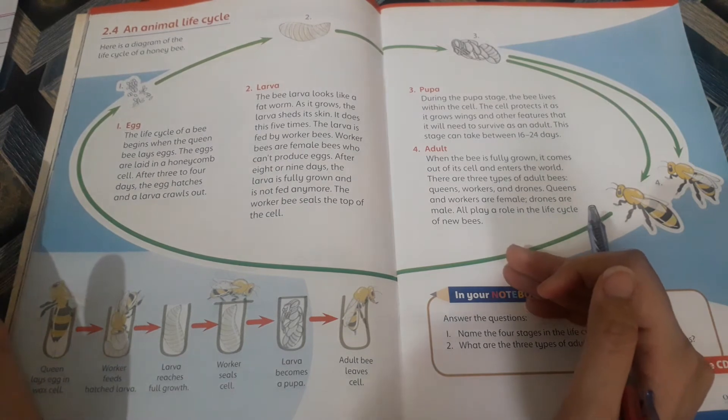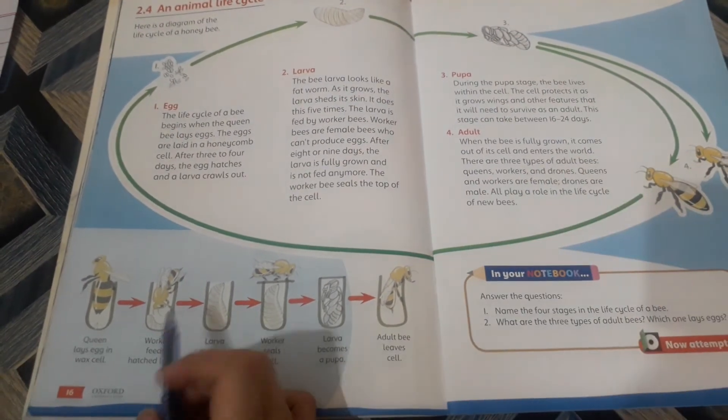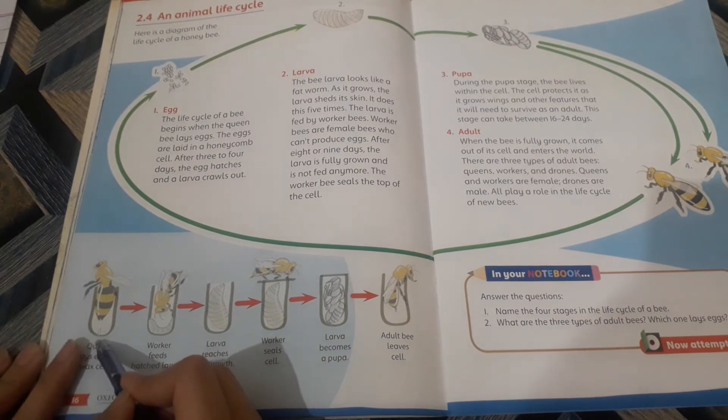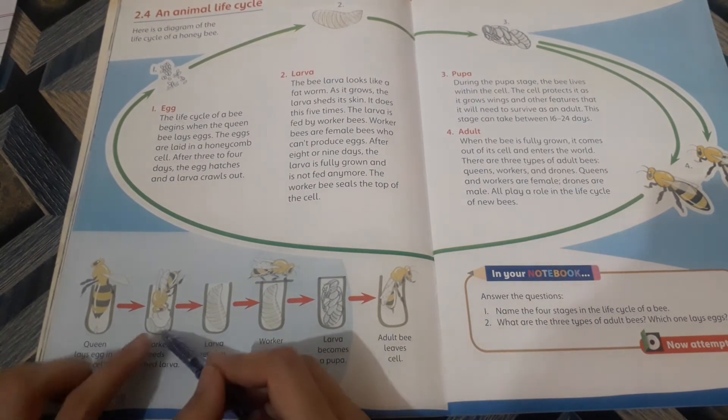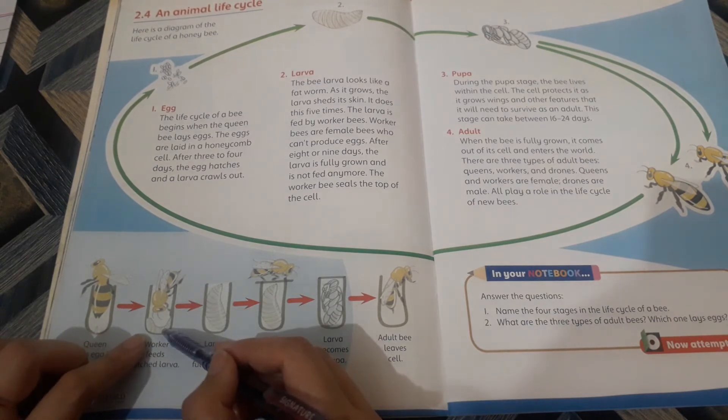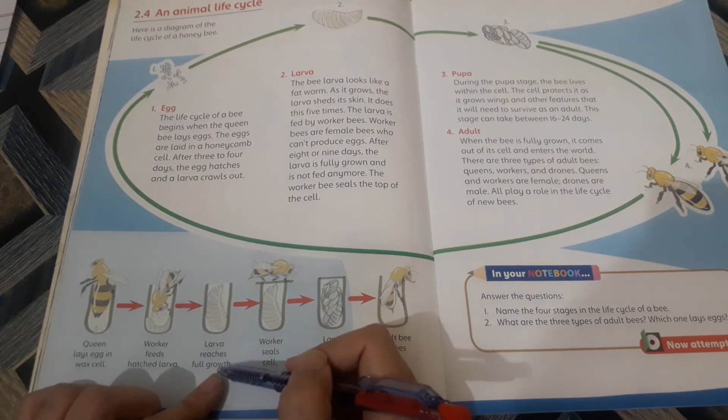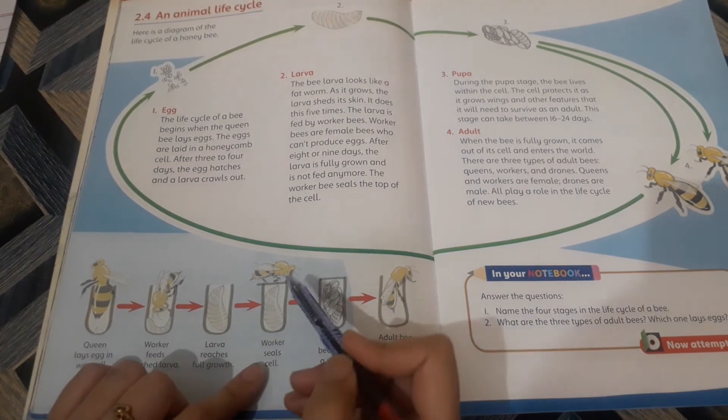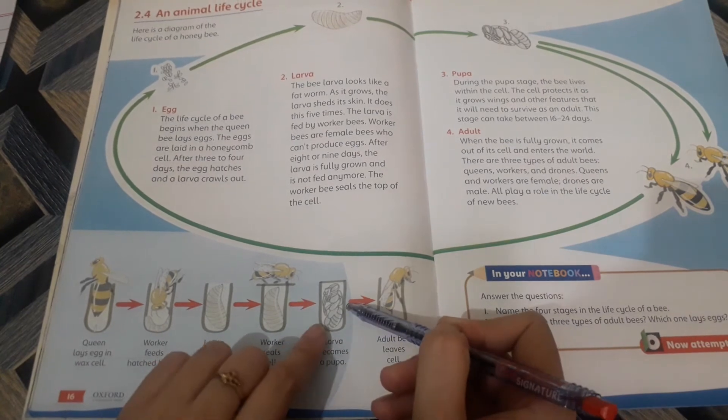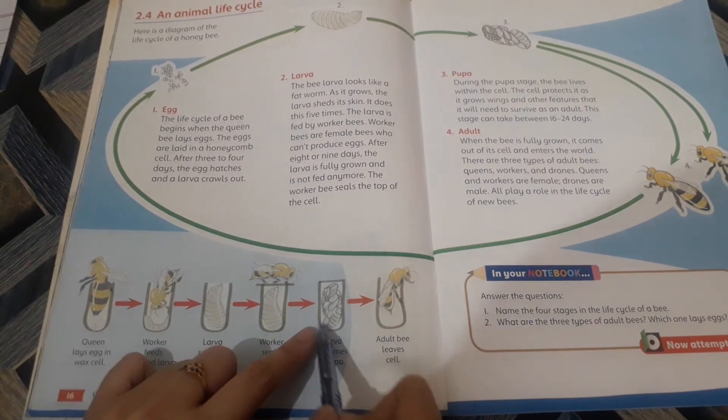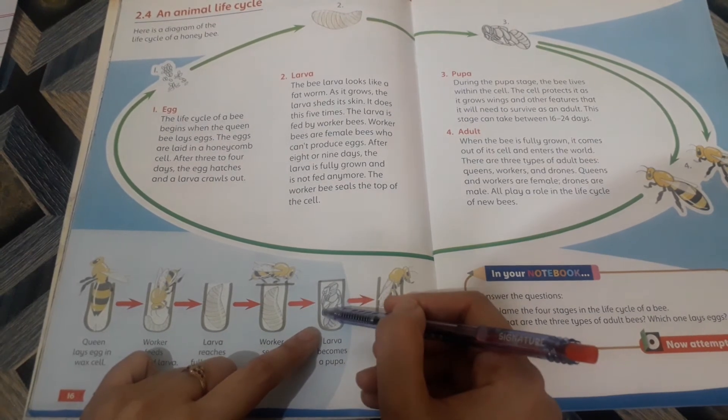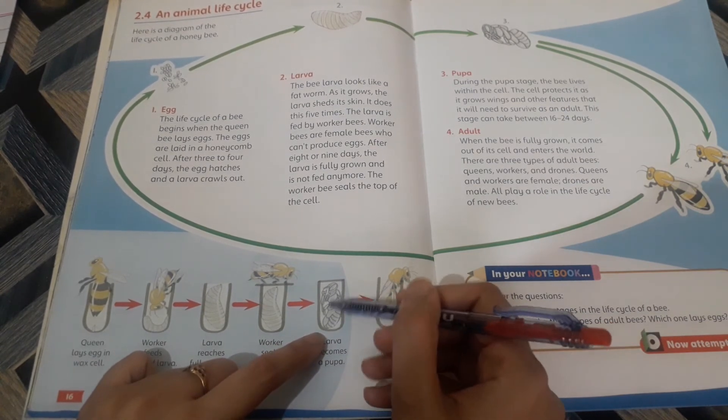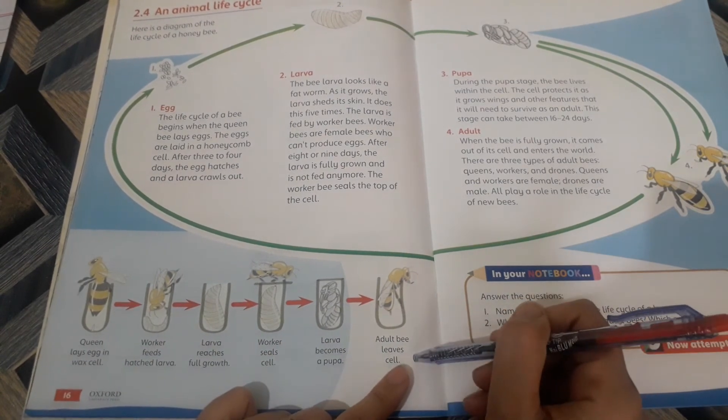Students, you can see here all the stages. The queen bee lays eggs in a wax cell. Worker feeds the larvae. Here is larvae which the worker bee is feeding. It becomes fully grown larvae, which is a fat worm. The worker bees seal the cell. Now larvae becomes pupa. In pupa, the legs, eyes, and wings develop. Then the adult bee leaves the cell.